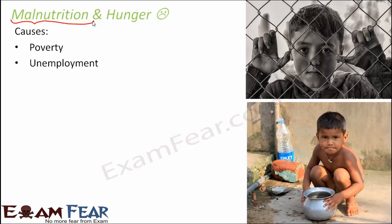Unemployment is another reason. Since there is no employment, people do not have jobs and do not have any source of income, and that is why there is poverty. Overpopulation is also a cause. The population is increasing day by day very fast. When there are so many human beings, obviously they need more food, but food production is not increasing at that rate. Also, providing employment to such a rapidly increasing population is becoming a very difficult task. Therefore people are not getting employment, people are poor, and they are not able to afford food. So because of all these reasons, there is a lot of malnutrition and hunger.